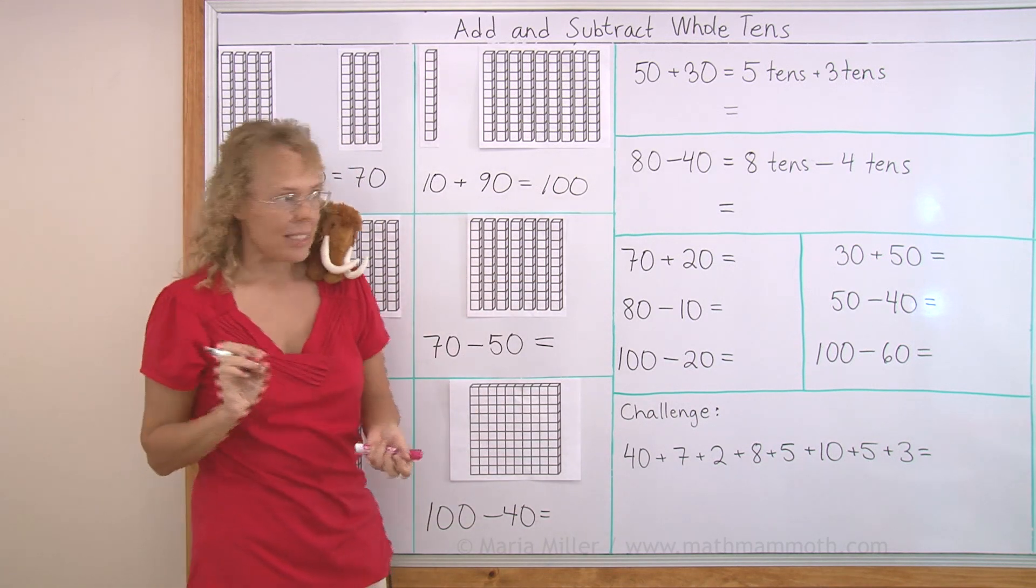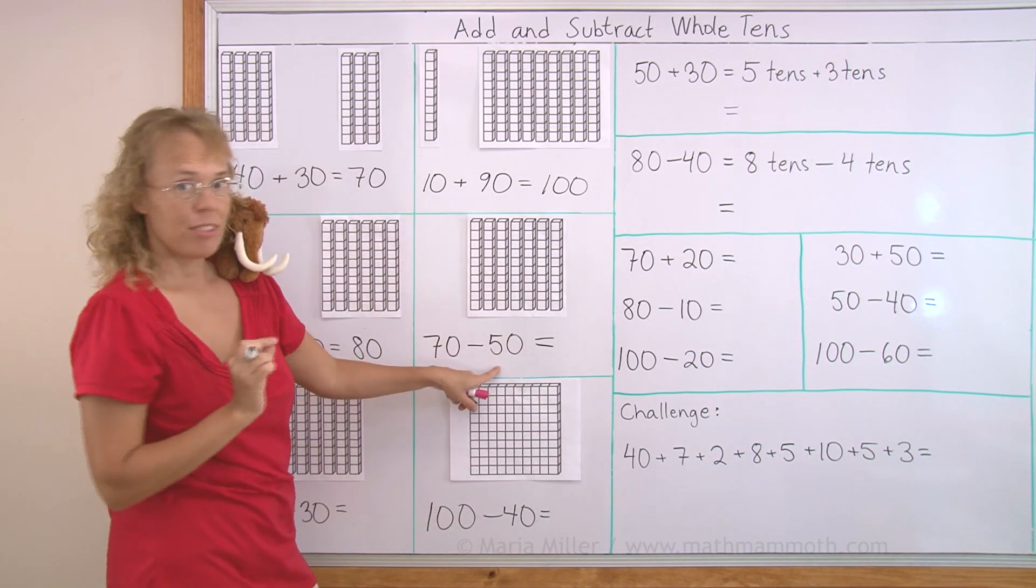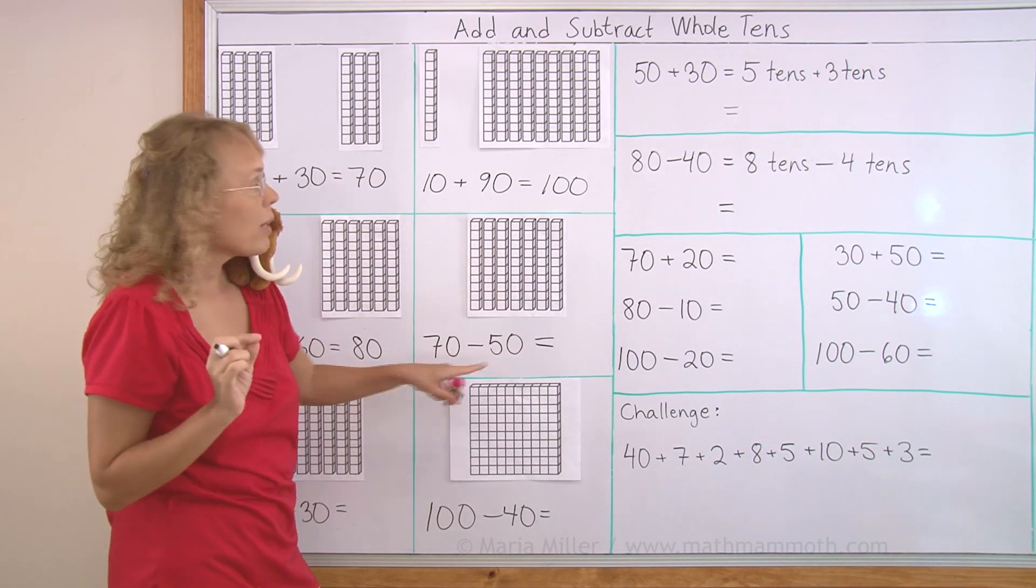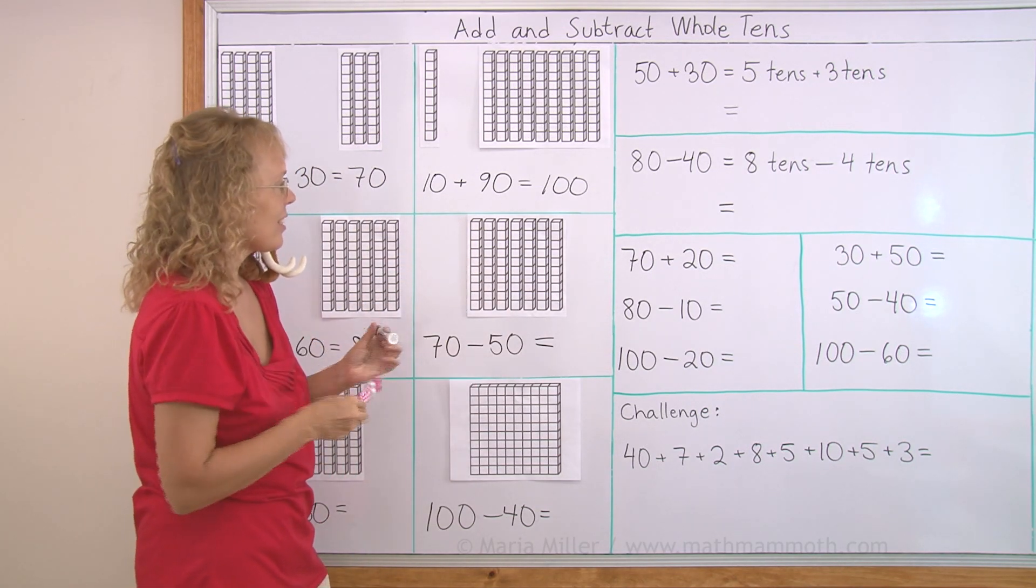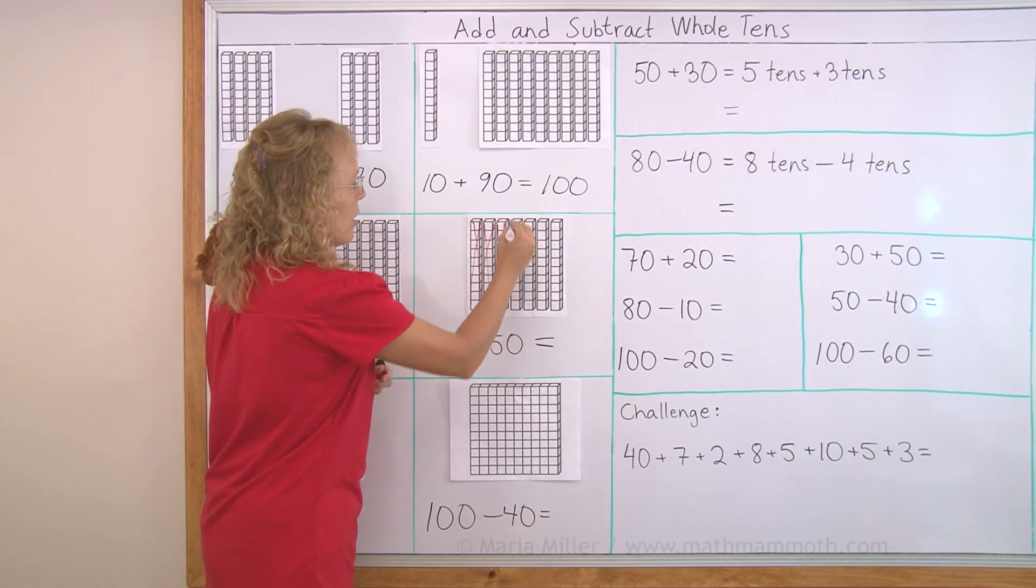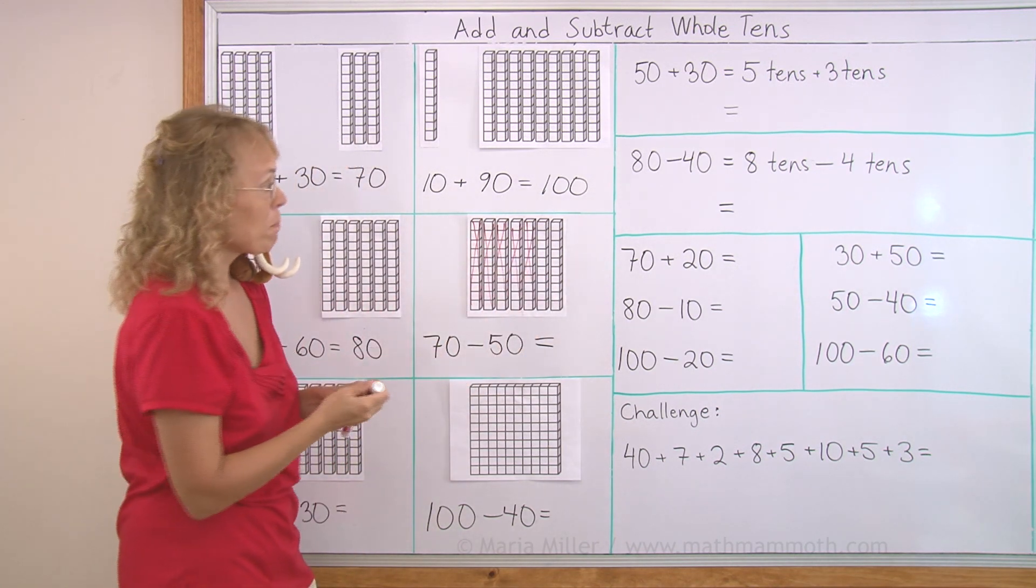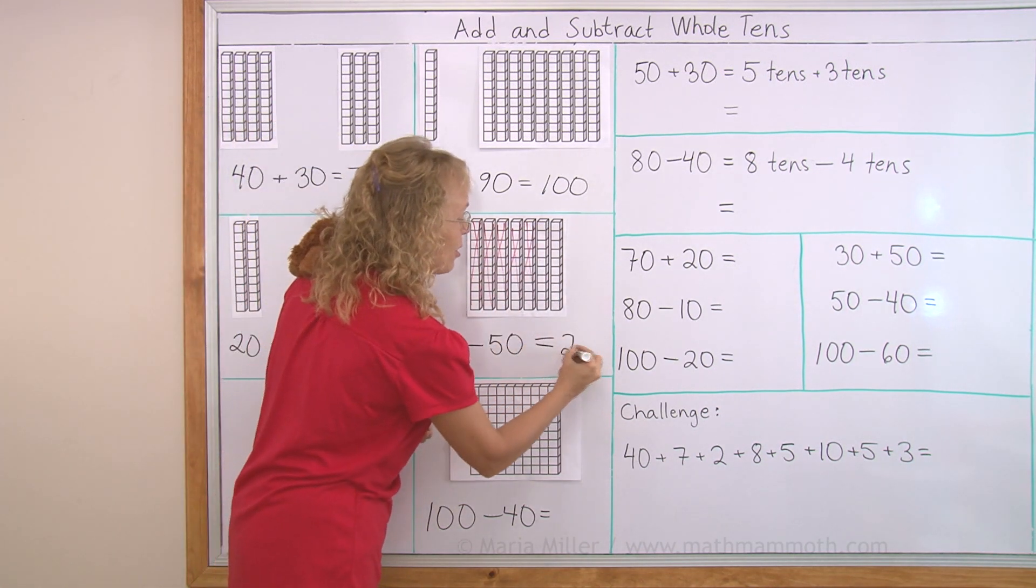Now let's try subtracting. Over here I have 70. If I take away 50, that means I take away five tens. Let's say that I just crossed them out. One, two, three, four, five tens are crossed out. So what is left? Two tens or 20.